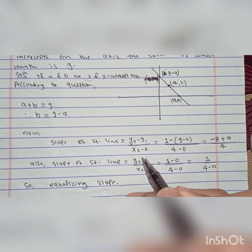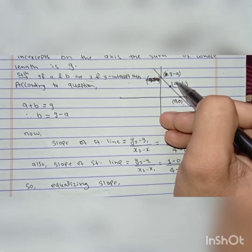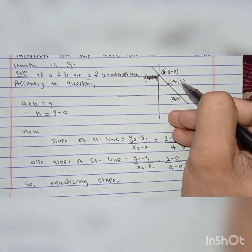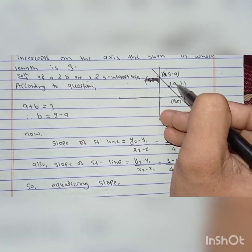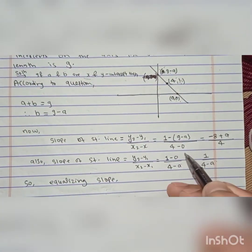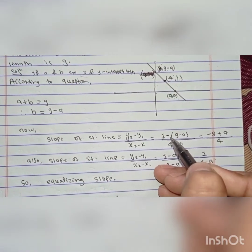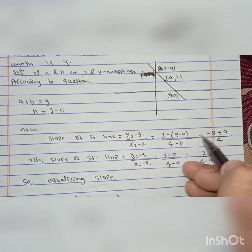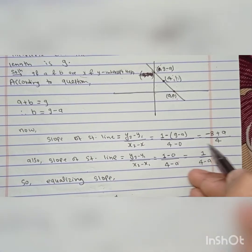The slope formula is (y₂ - y₁) / (x₂ - x₁). Taking the points (0, 9-a) and (4, 1), the slope equals (y₂ - y₁) / (x₂ - x₁) = (1 - (9-a)) / (4 - 0). Opening the bracket: 1 - 9 + a = a - 8, over 4. So the slope is (a - 8) / 4.